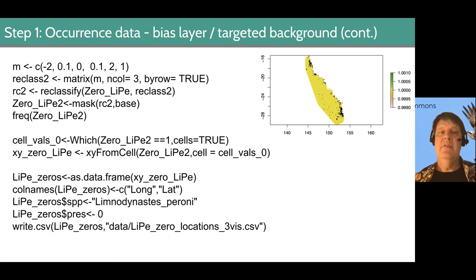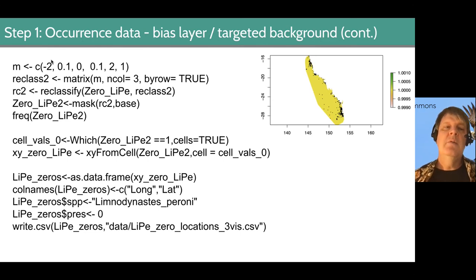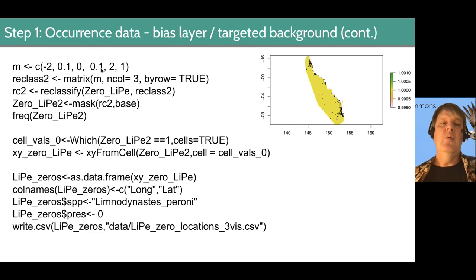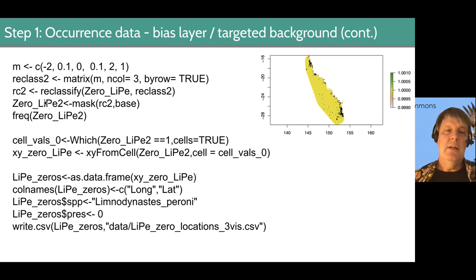Ideally that shouldn't happen — it probably had to do with changing the spatial extent filter from 100 to 200 meters. So we're going to zero out those negative values with a reclassification: anything negative goes to zero, and anything positive between 0.1 and 2 stays as one. Finally, this zeroLIPE2 raster gives us a one for every place where a frog other than our target species was observed.